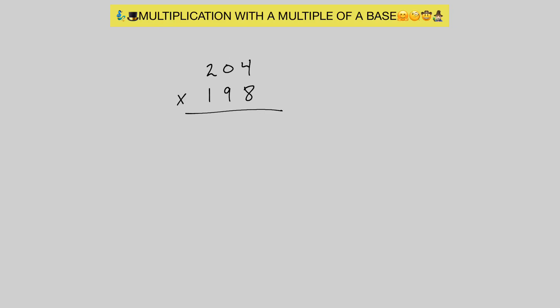Here we have 204 times 198. We're going to work off the multiple of base 200, which is a multiple of 100. We say 204 is plus 4 away from 200, and 198 is minus 2 away from 200. For our left hand side: 204 minus 2 gives us 202. For our right hand side — remember, we're allowed two digits — 4 times negative 2 gives us negative 8, so we write it as 0,8 bar. Before we finish, we multiply the left hand side by 2: 202 times 2 gives us 404, and we have 0,8 bar.